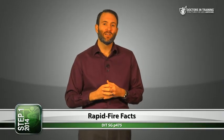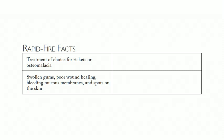Rapid-fire facts: treatment of choice for rickets or osteomalacia — vitamin D. A patient with swollen gums, poor wound healing, bleeding mucous membranes, spots on the skin — or if they have a pirate on their shoulder — think scurvy, which is vitamin C deficiency. That's the end of Biochem 17. I hope you learned something — I'll see you next time.